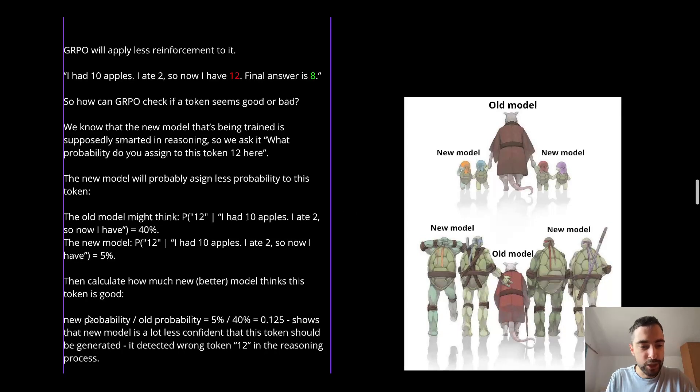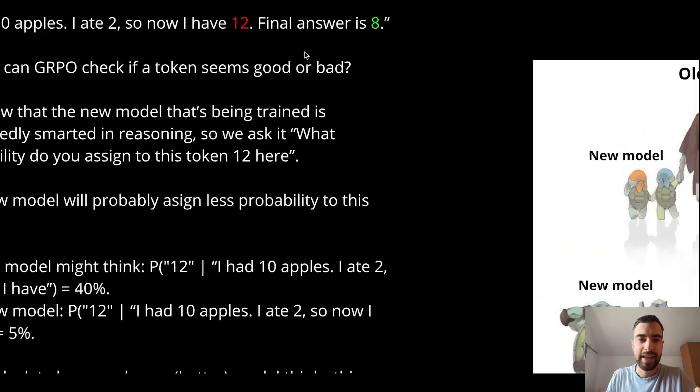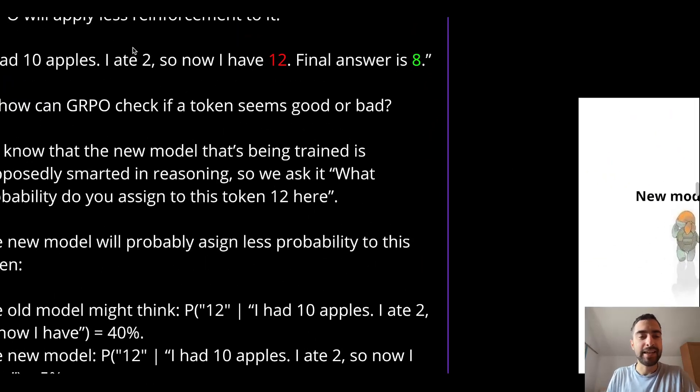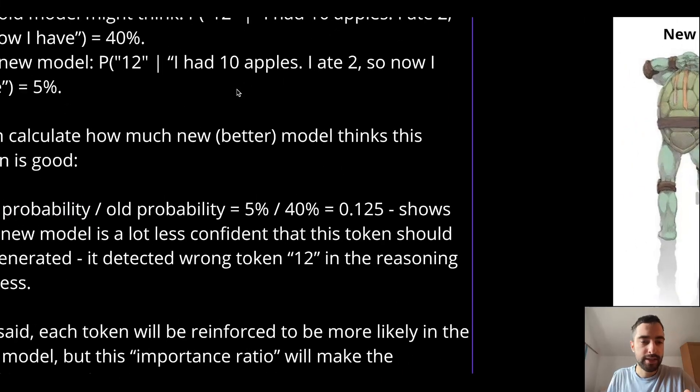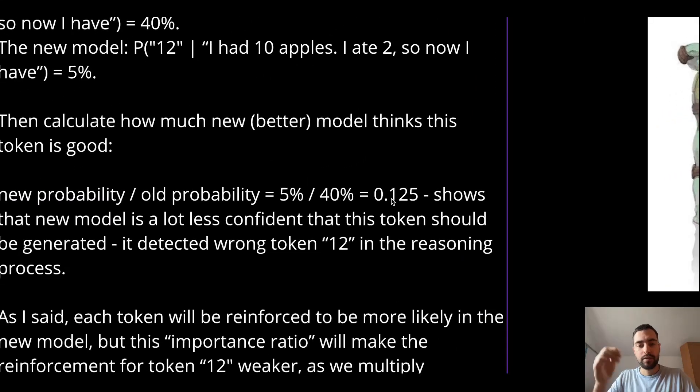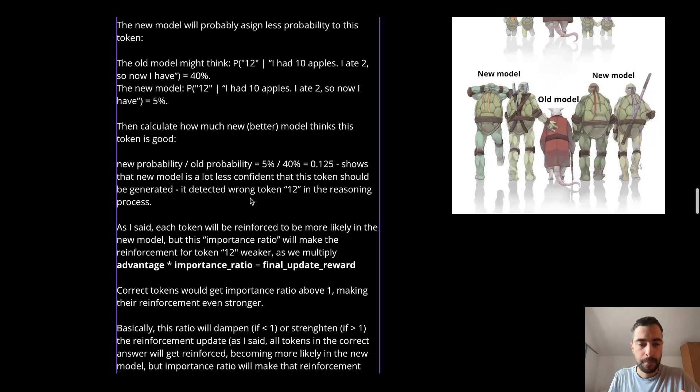So if we divide the new probability with old probability, we get this confidence level of how confident the new model is that this token should be there. They call this importance, not confidence or importance ratio, but let's just call it confidence. It's simpler to understand. For good tokens and correct tokens, the new model can assign even higher probability than the old model because new model is even now more confident, more certain in these correct tokens. So this ratio will be even higher than one because this could be 50 or 60% here if this was correct token.